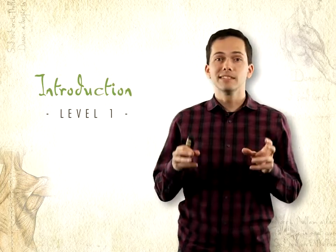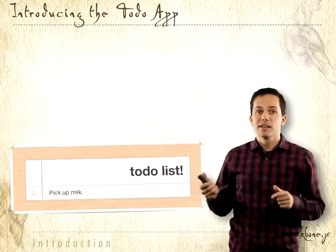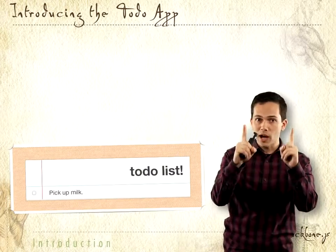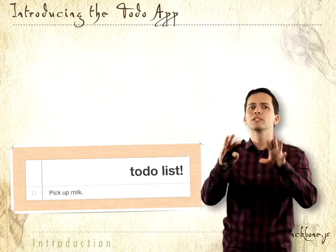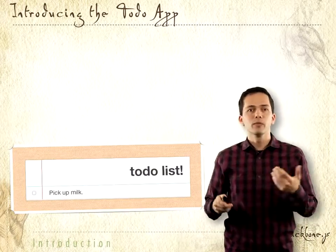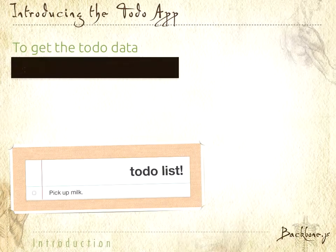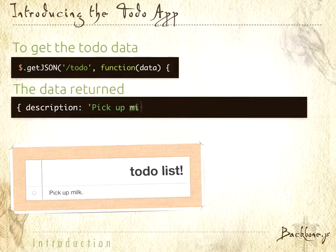We're going to create a really simple to-do app. It's going to look something like this — simple because it can only have one to-do item. It's a feature, not a bug. So if we were to build this to-do app and we want it to be very responsive on the client side, we might call getJSON to fetch some JSON data, which we can then load onto the page for our first to-do item. The JSON returned might look something like this, and we can use that to render out our first to-do item.